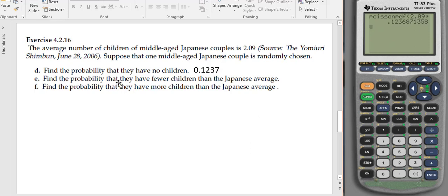Now we want to find the probability that a family has fewer than the average Japanese household family. When we look here, the average number is 2.09. The whole number smaller than that would be 2, so that means we can have either 0, 1, or 2 children in the household.